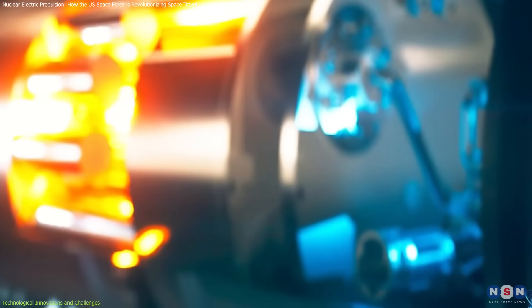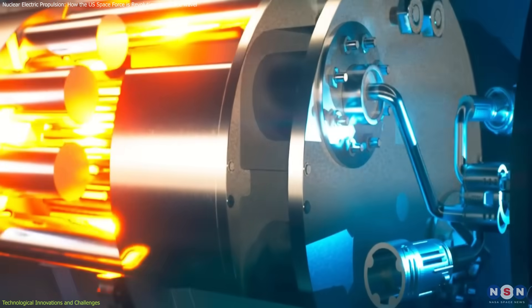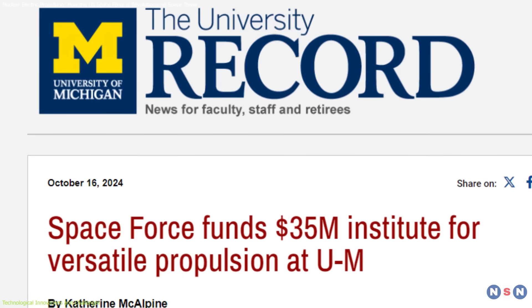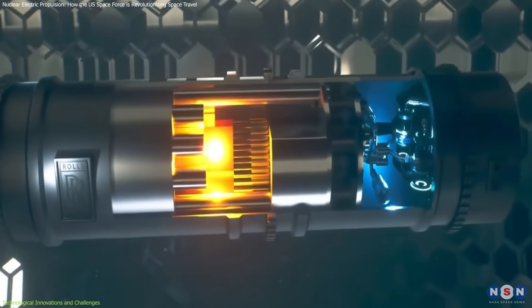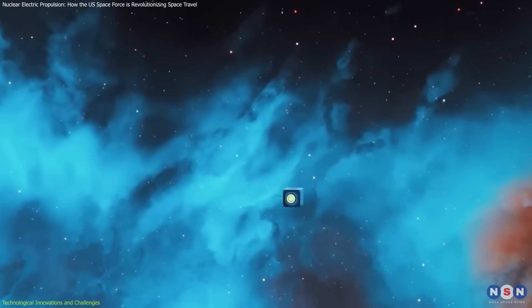However, this requires robust power conversion systems. The University of Wisconsin's power processing module plays a crucial role in converting the reactor's output into usable electricity for the thruster.